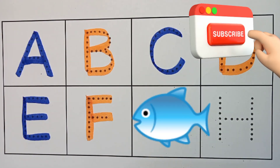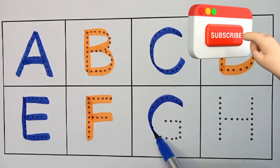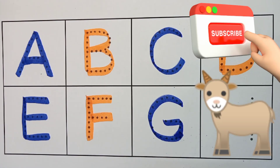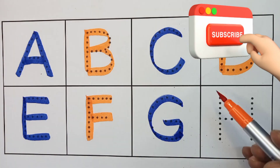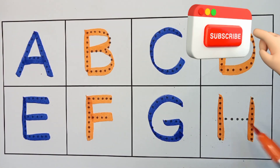F. F for fish. Blue color. G. G for goat. Orange color.